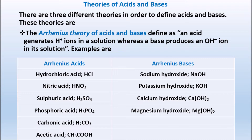Arrhenius bases: Sodium Hydroxide (NaOH), Potassium Hydroxide (KOH), Calcium Hydroxide, Magnesium Hydroxide (MgOH) - all are Arrhenius bases. So according to Arrhenius, acid is that which generates H+ ions in solution, and base is that substance which generates OH- ions in solution.